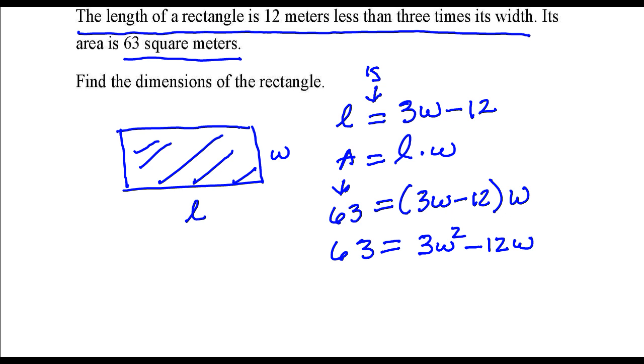This equation is quadratic, so what I want to do is I want to get all the terms on one side, and then I want to get a zero on the other side of the equation. So I have 3W squared minus 12W minus 63, because I subtract 63 from both sides of this equation, and the other side is going to be equal to zero.